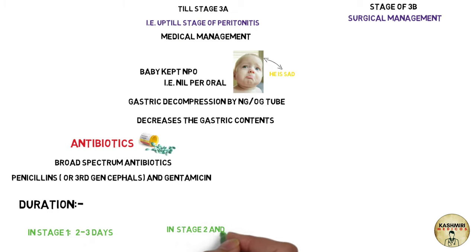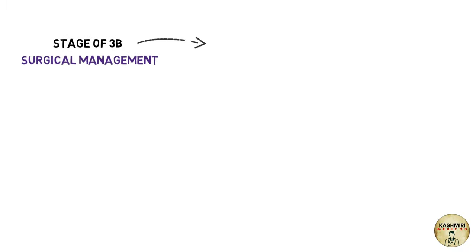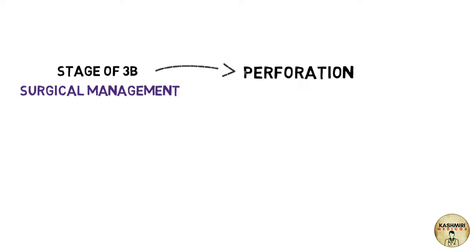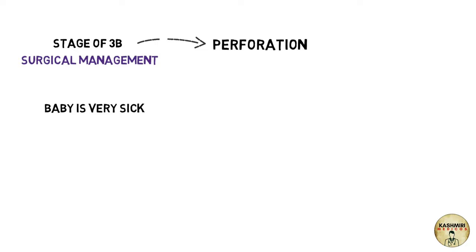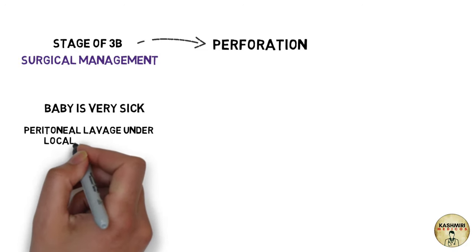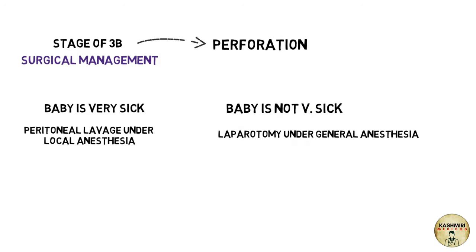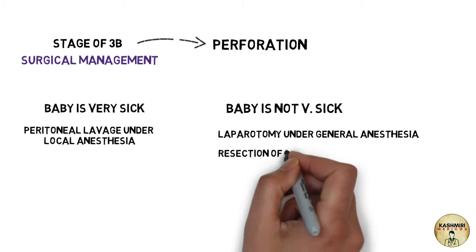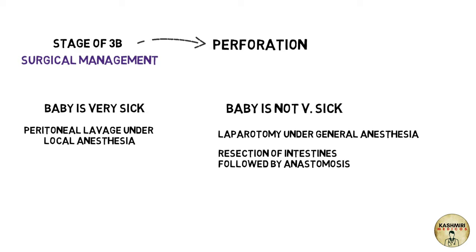Stage 3B is the stage of perforation where surgical management is needed. If the baby is very sick, peritoneal lavage under local anesthesia is performed. If the baby is not very sick, laparotomy under general anesthesia is done. The procedure involves resection of the affected intestines followed by anastomosis.